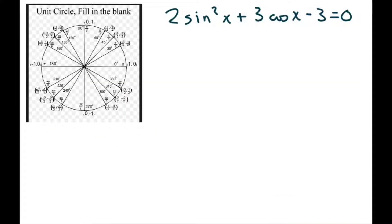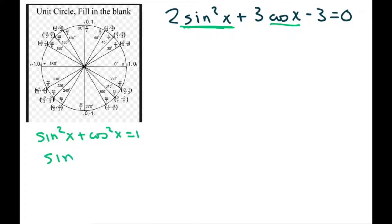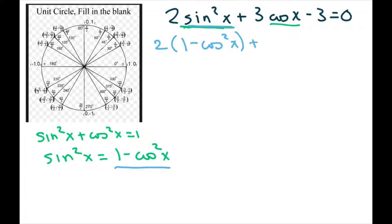Let's get started. When you see something like this, the problem is you have cosine but also sine squared. So I'm going to use the identity: sine squared of x plus cosine squared of x equals 1. I want to write this in terms of cosine, so sine squared of x equals 1 minus cosine squared of x, and I'm going to substitute that in. Now I have everything in terms of cosine so I can make a trinomial.